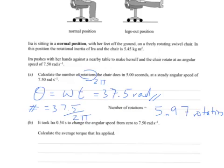You could have used the angular frequency, omega equals 2π f. Since the frequency is going to be 7.5 divided by 2π, it gives you the amount of rotations per second, and you just multiply that by 5. That's another way to do it.